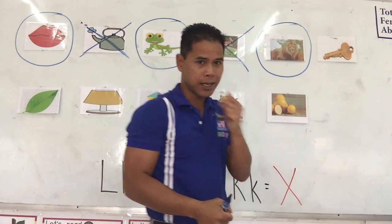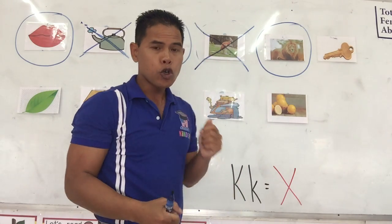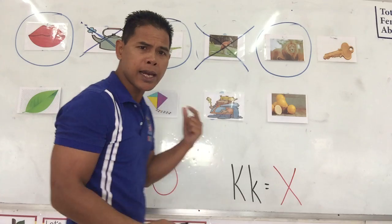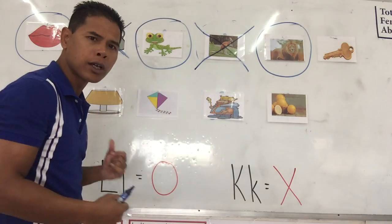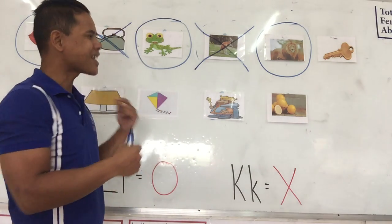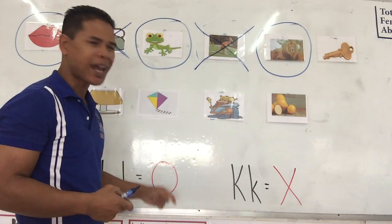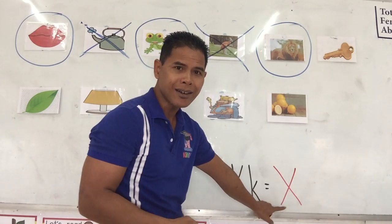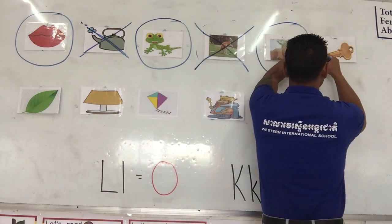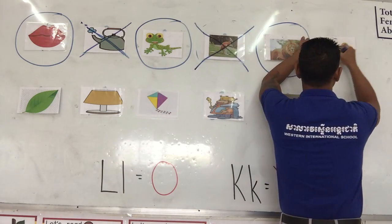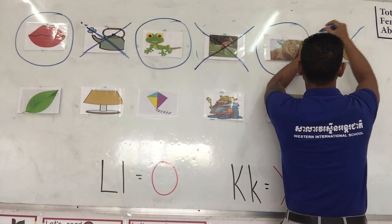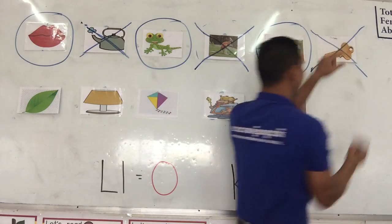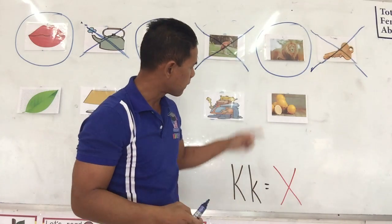Next one is key. Key. Which one is it, K or L? Yes, it is the letter K. So we cross it out. Put an X on it. Excellent.